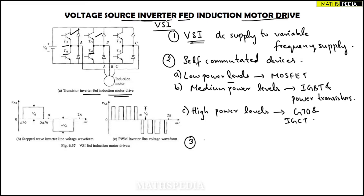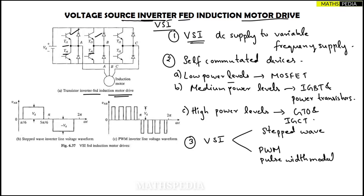Moving to the third point: VSI can be operated in two ways. One is the stepped wave inverter, and another is PWM — that is, pulse width modulation. So the voltage source inverter can be operated either as a stepped wave inverter or as a pulse width modulated inverter.